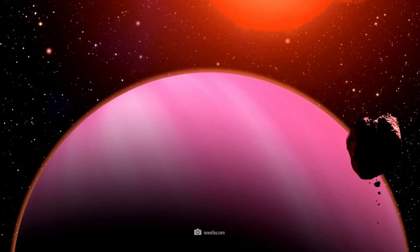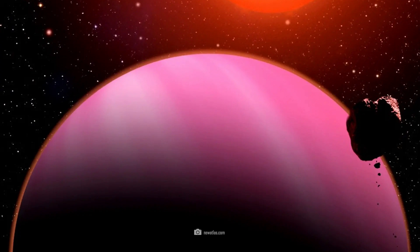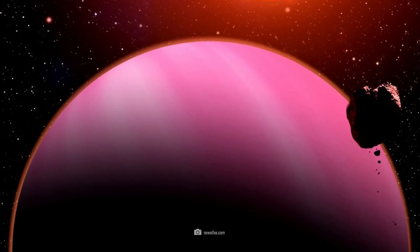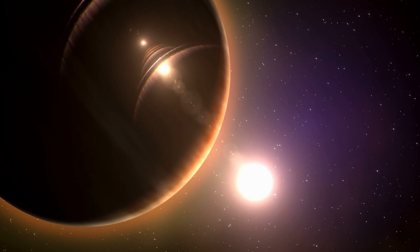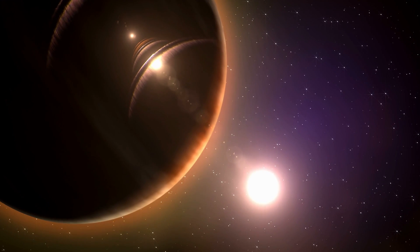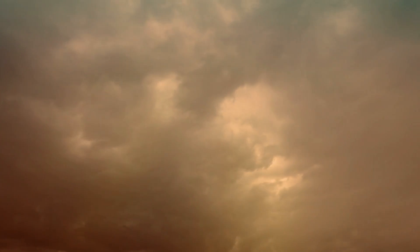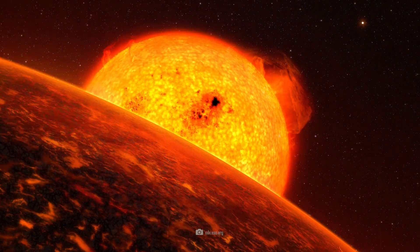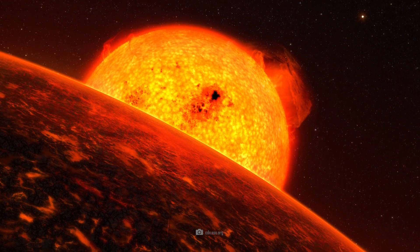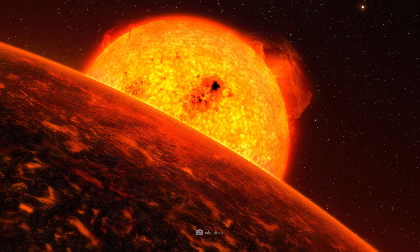On the night side of WASP-76b, this world looks very different. It's icy cold and always pitch black. Interestingly, the extreme temperature differences between the night and day sides lead to violent atmospheric winds that transport the iron vapor to the cooler night side, where it condenses again as rain of liquid iron. This bizarre weather phenomenon makes WASP-76b one of the most extreme and unusual exoplanets known.